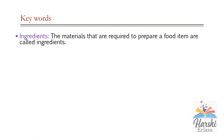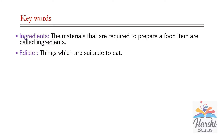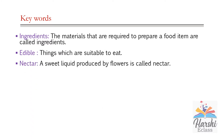Ingredients: the materials that are required to prepare your food item are called ingredients. For making chapati, we need atta and water — those are the ingredients required for making chapati. Edible: things which are suitable to eat are called edible.